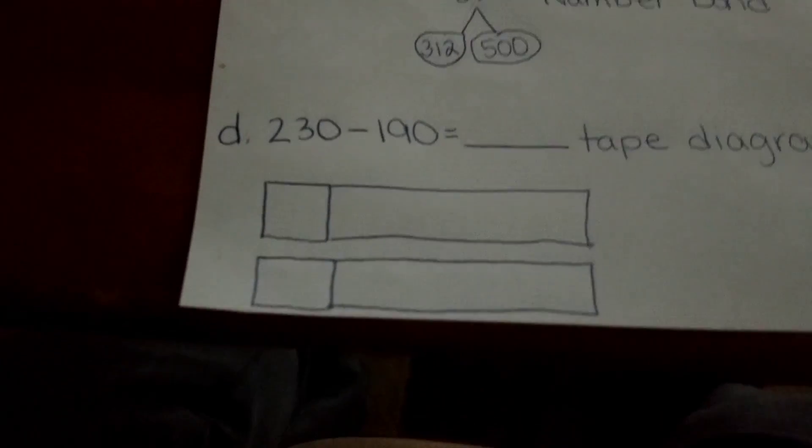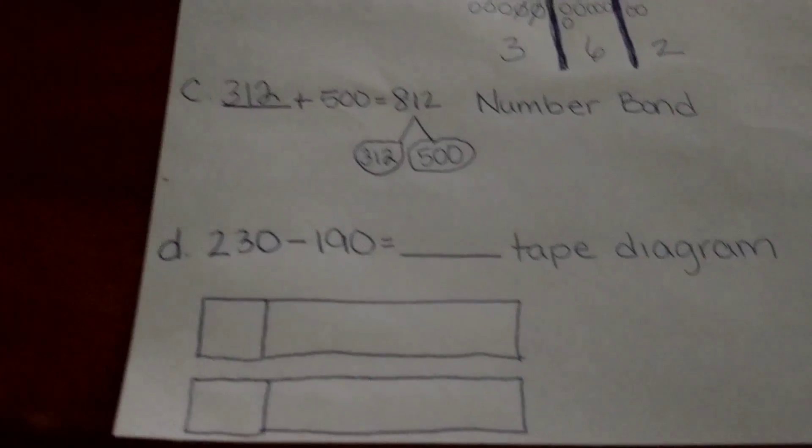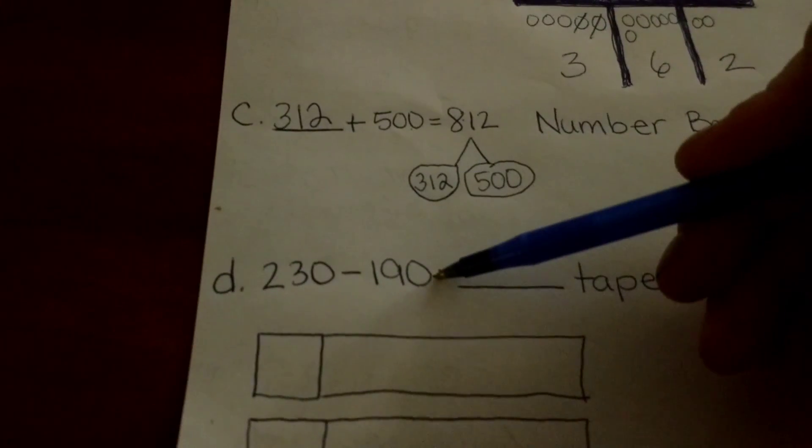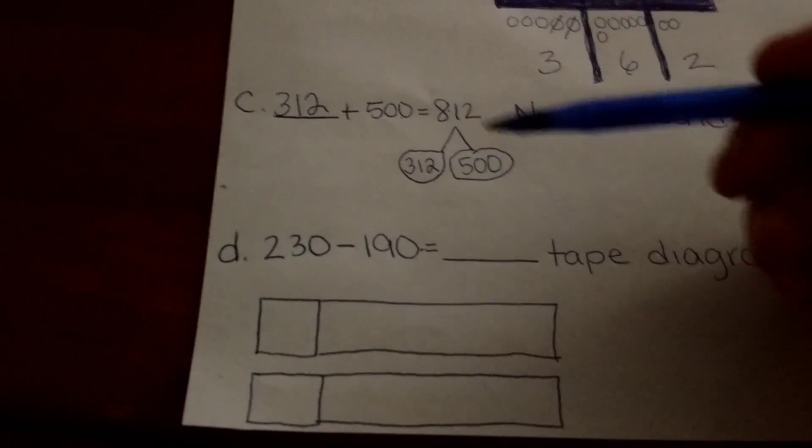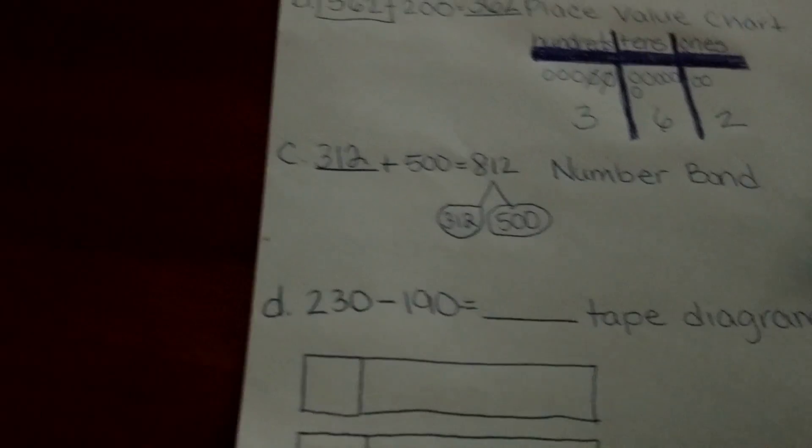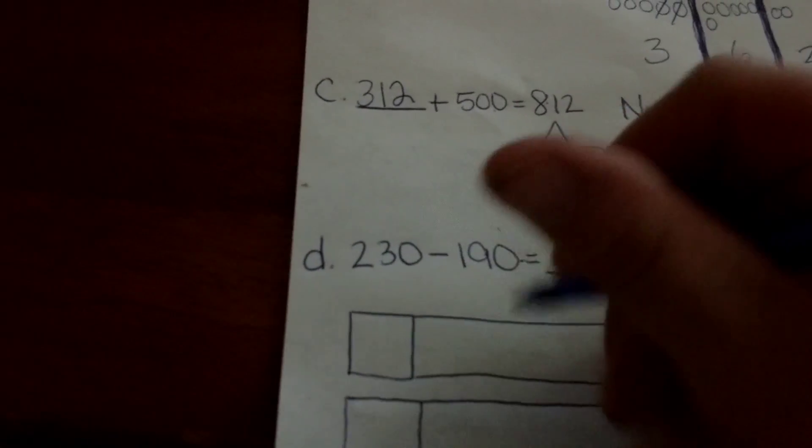Tape diagram. 230 minus 90. With tape diagram, you want to take the number that you're subtracting and try to get it to a friendly number. A friendly number is any number ending in zero. So this number, 190, for us to subtract...